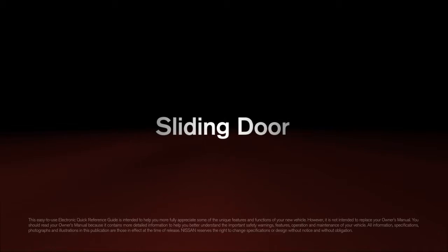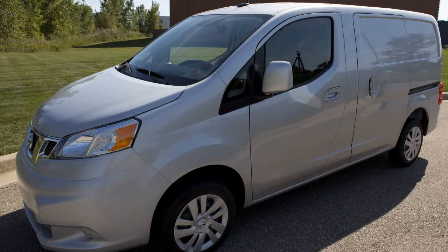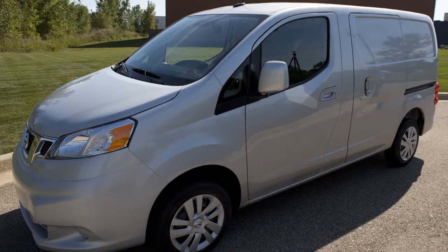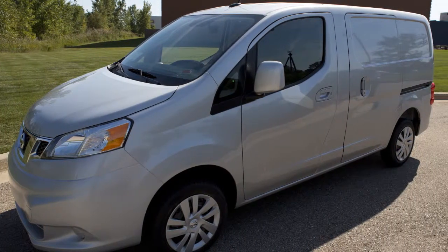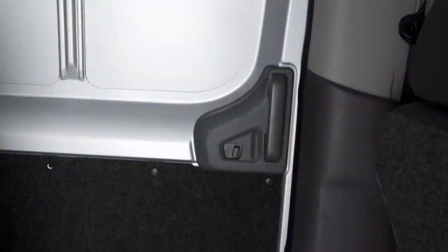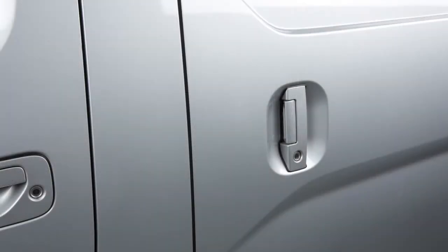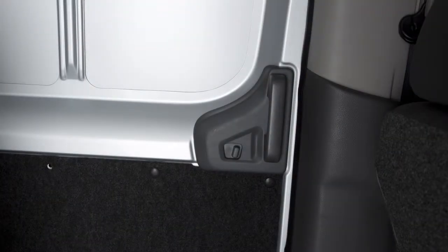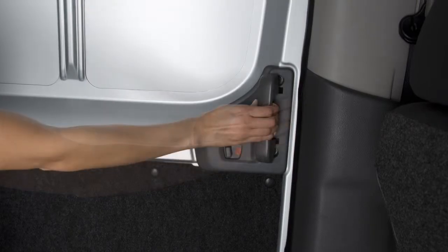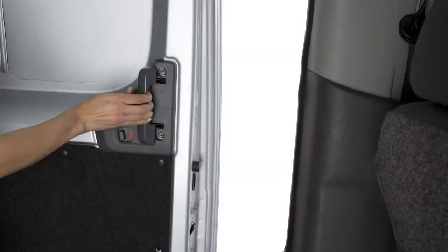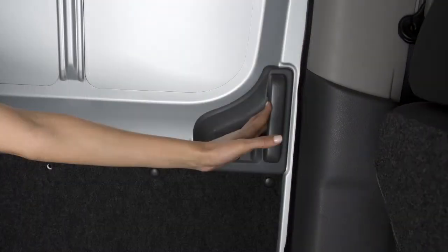Sliding Door. Your vehicle's sliding door can be opened and closed from inside or outside the vehicle. To open the sliding door from inside the vehicle, pull the handle toward the back of the vehicle. To close, pull the door handle toward the front of the vehicle.